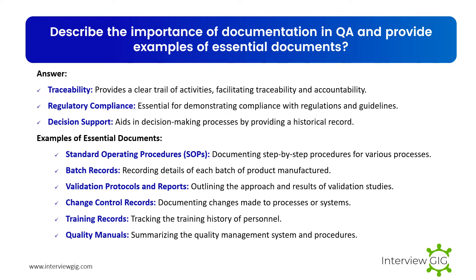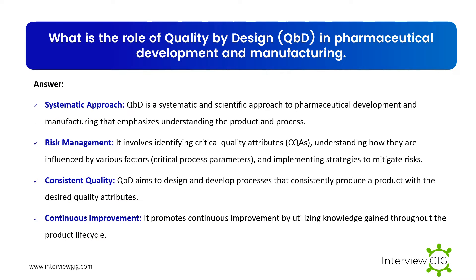Quality manuals summarize the quality management system and procedures. What is the role of quality by design (QbD) in pharmaceutical development and manufacturing? QbD is a systematic and scientific approach to pharmaceutical development and manufacturing that emphasizes understanding the product and process. It involves identifying critical quality attributes (CQAs), understanding how they are influenced by critical process parameters, and implementing strategies to mitigate risks. QbD aims to design and develop processes that consistently produce a product with the desired quality attributes and promotes continuous improvement by utilizing knowledge gained throughout the product lifecycle.